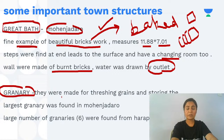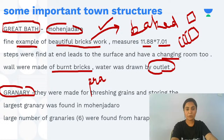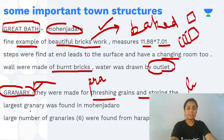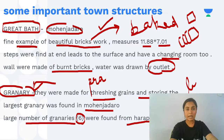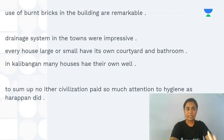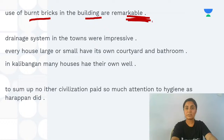Next important structure is granaries. During Indus Valley Civilization there was a practice of producing and storing food grains and cereals. The largest granary has been found at Mohenjodaro, whereas the largest number of granaries — six in number — have been found from Harappa. Buildings also notably used burned bricks throughout their construction.